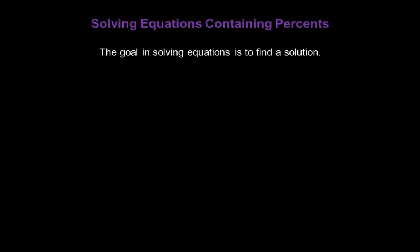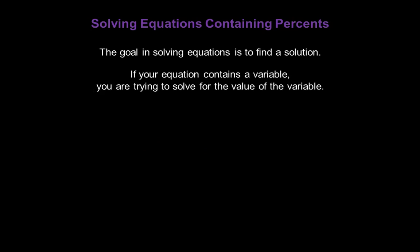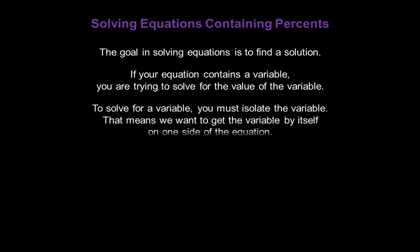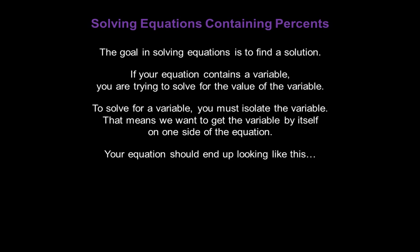The goal in solving equations is to find a solution. If your equation contains a variable — a letter — you're trying to solve for the value of that variable. To solve for a variable, you must isolate it, meaning we want to get the variable all by itself on one side of the equation. Your equation should end up looking like this: the variable equals a number. For example, p equals 16.